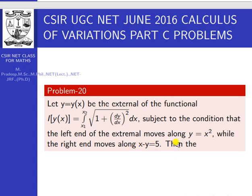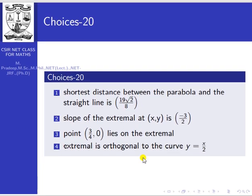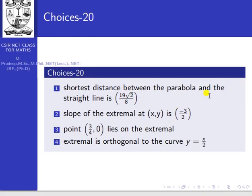We have already discussed this type of problem in earlier classes. The options are: the shortest distance between the parabola and the straight line is 19√2/8; the slope of the extremal at x,y is -3/2; the point (3/4, 0) lies on the extremal; and the extremal is orthogonal to the curve y = x/2.